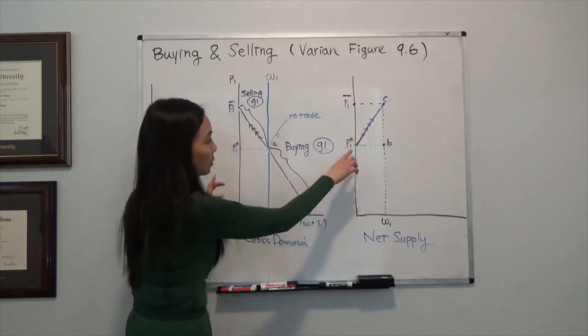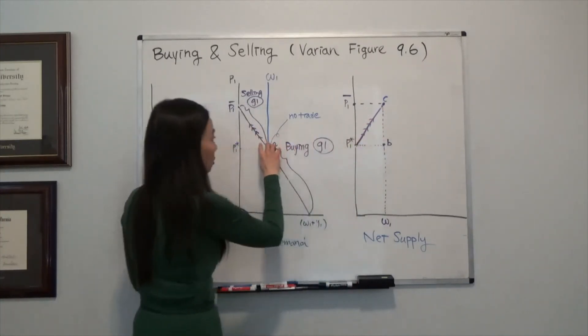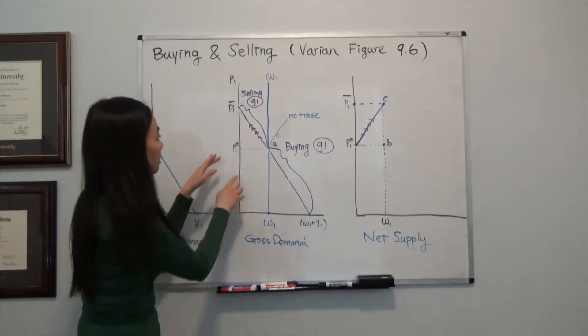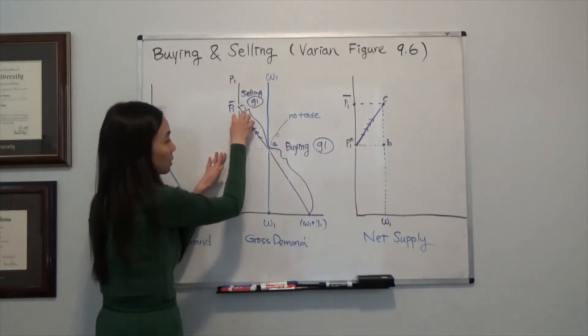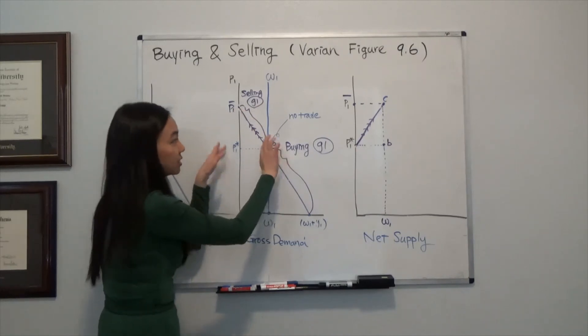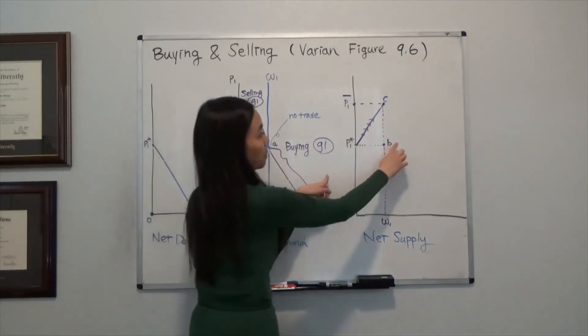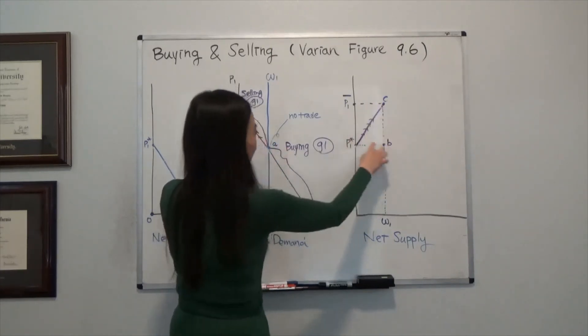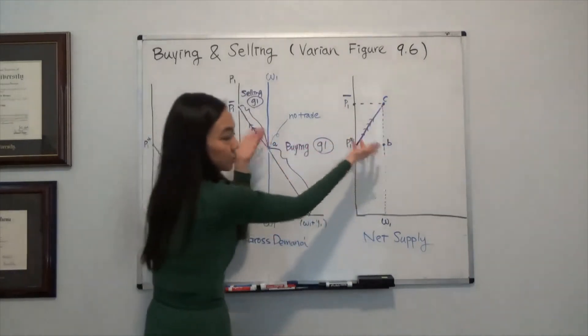Which means my triangle P1 star, P1 bar, and A is a mirror of triangle B, C, P1 star. So these two triangles are actually identical. They are mirrored to each other.